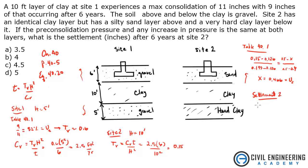Now we can solve for the settlement at Site 2. We know the maximum consolidation is 11 inches. Setting up: x / 11 = 0.466. Solving gives x = 5.13 inches. That is the consolidation that will occur after 6 years at Site 2 with the same pressures at both locations. That gives an answer closest to D — D is the final answer.